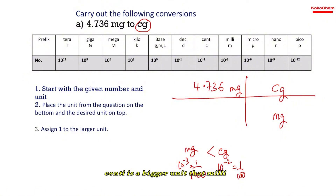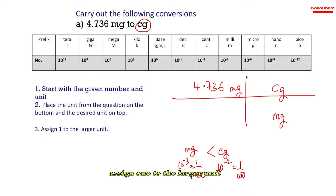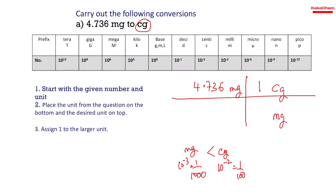Step 3: Centi is bigger than milli, so assign 1 to the larger unit. The larger unit is centi, so we place 1 in front of centigram. The smaller unit is milligram.